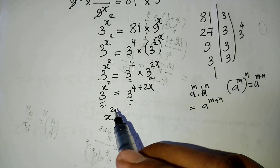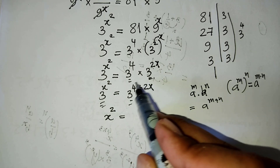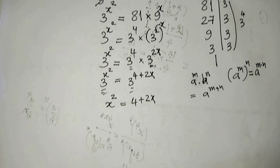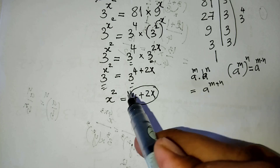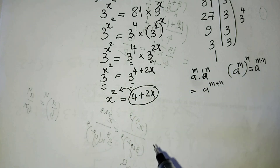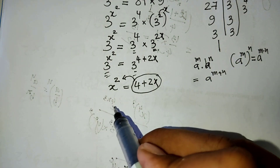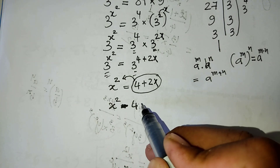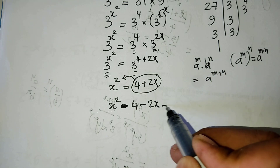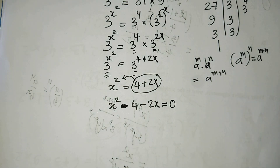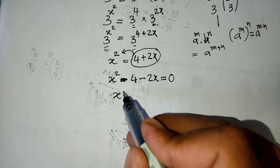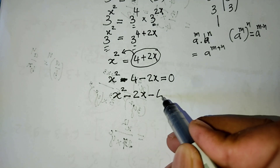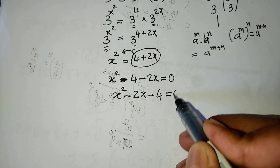We get x squared is equal to 4 plus 2x. And now I move 2x to the left hand side. So we get x squared minus 2x minus 4 equals 0.